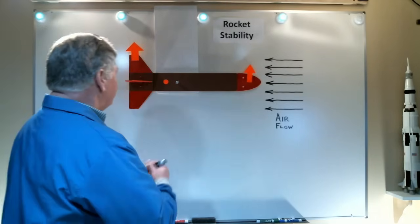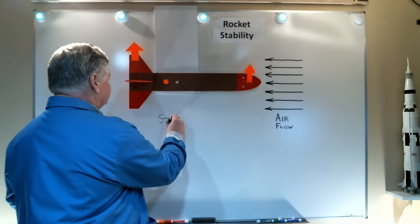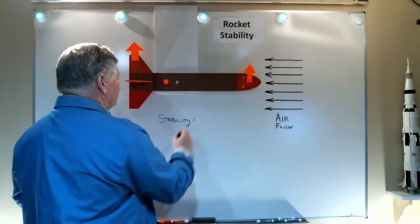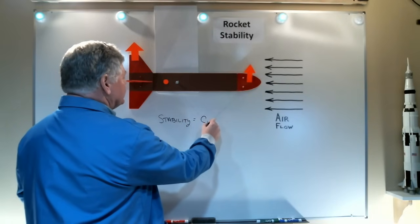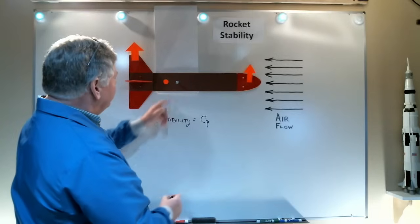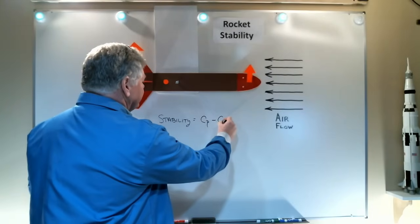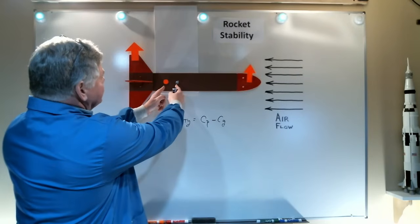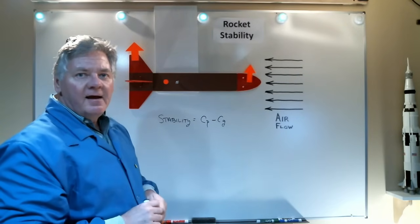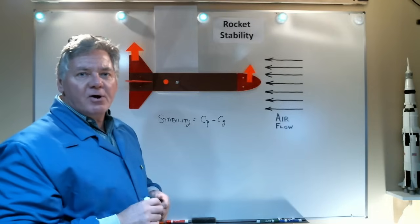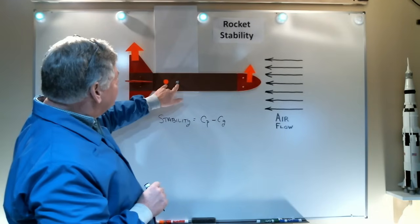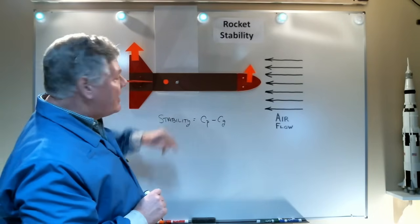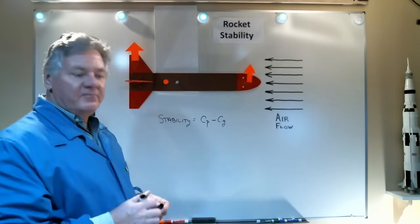And so, we can identify that as stability equals the center of pressure measured from the nose minus the center of gravity from the nose. And that difference is how much stability my rocket has. And we identify that as the static margin. Now, ideally, we want at least one body diameter between the center of gravity and center of pressure, and that will create a stable rocket configuration.